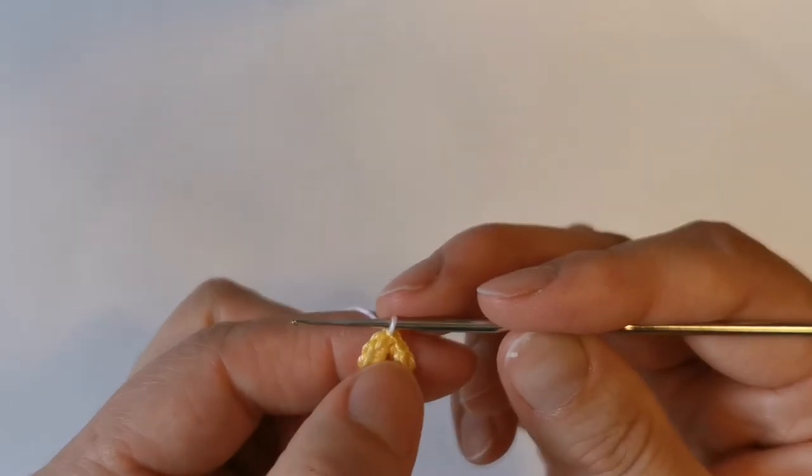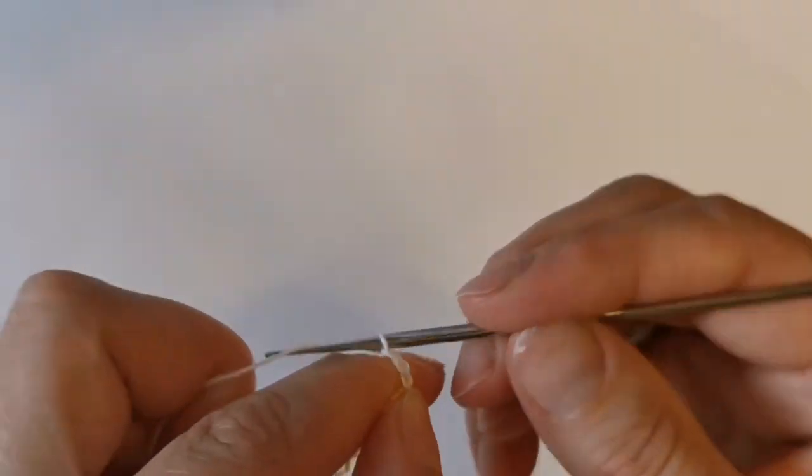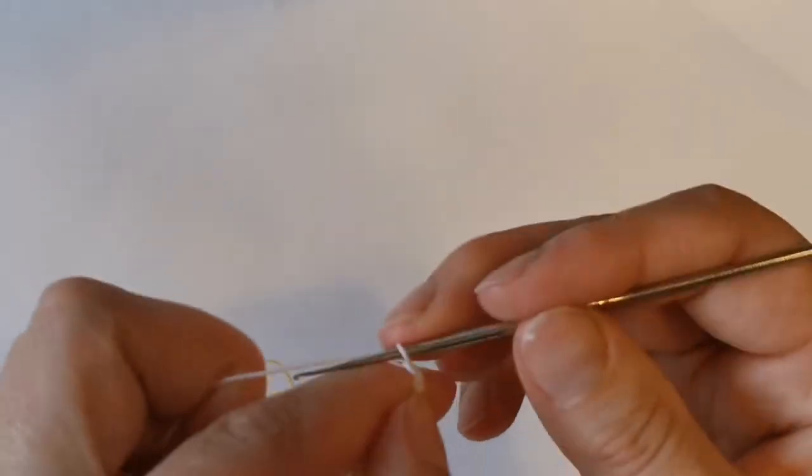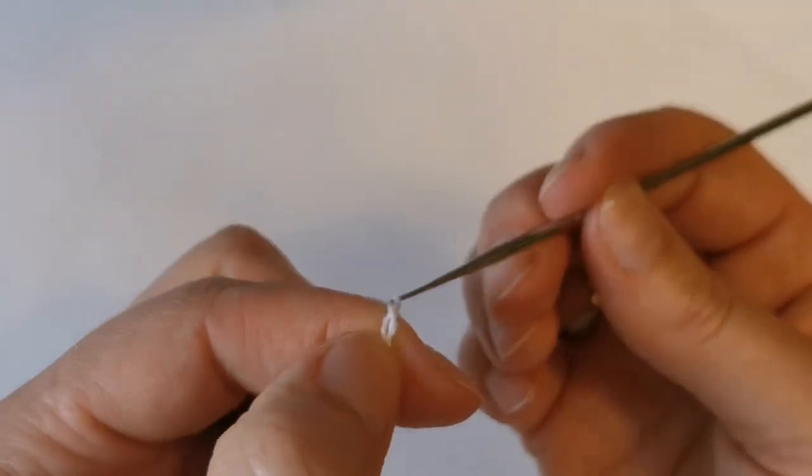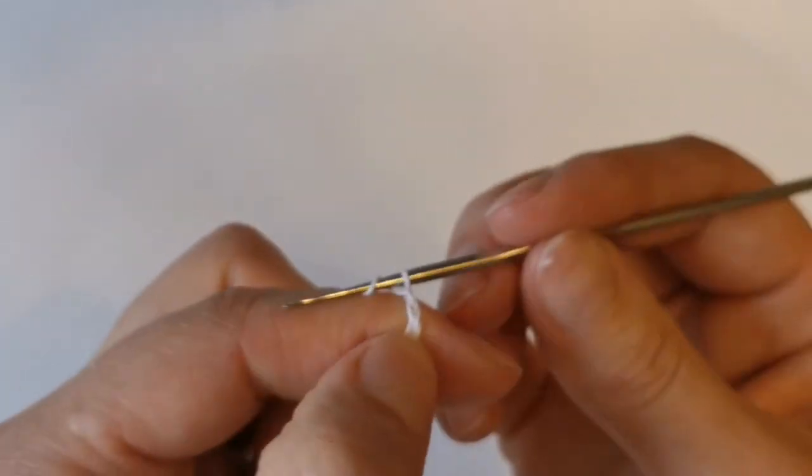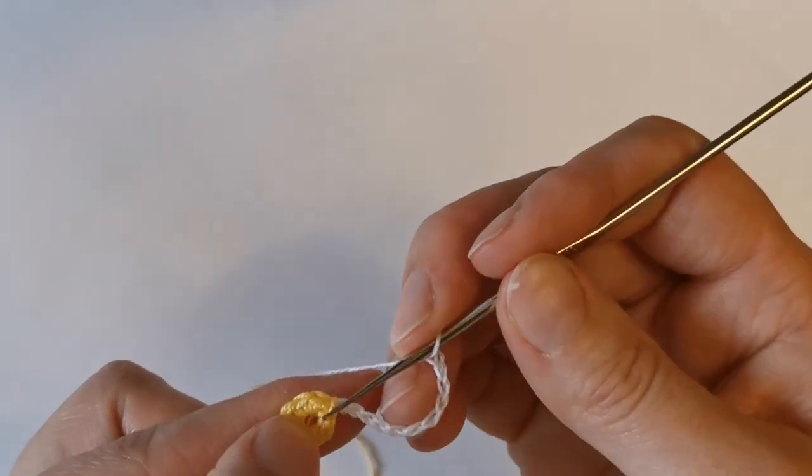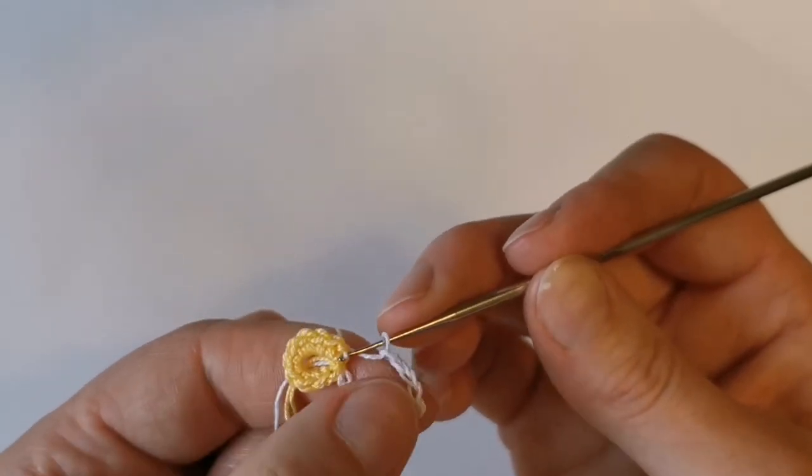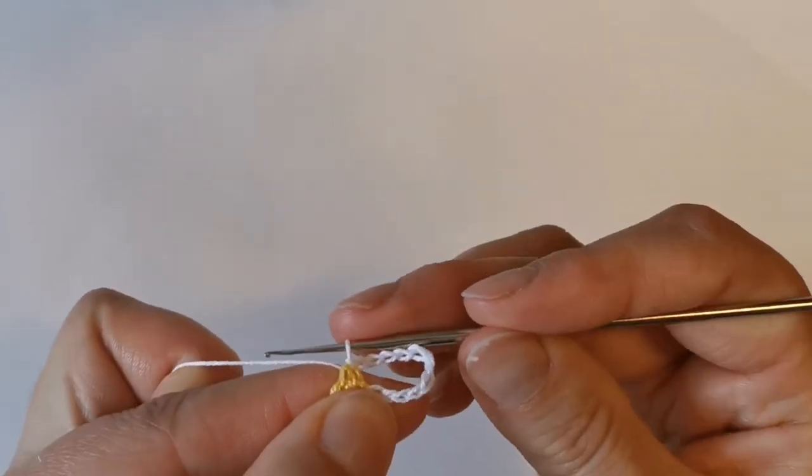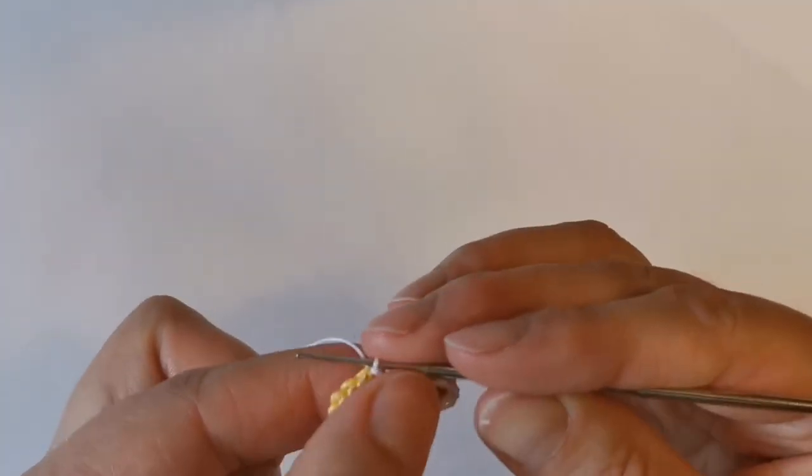Now make 11 chain for first petal: one, two, three, four, five, six, seven, eight, nine, ten, eleven. Make sure it's not twisted. Insert the hook into the next stitch and make slip stitch. Pull through yellow loops and pull through white loops at once. Make it tight. This is our first petal. Continue the same way.